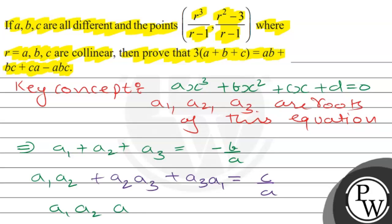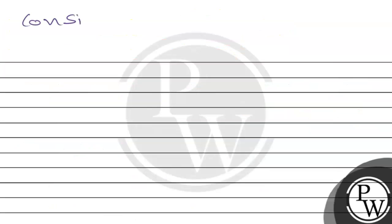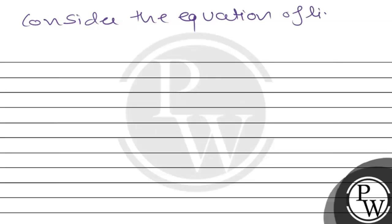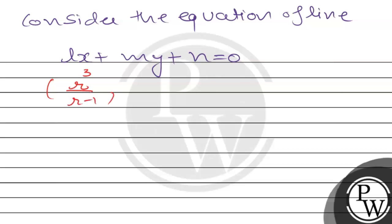By Vieta's formulas: a1·a2·a3 = -d/a. Now consider the equation of a line: LX + MY + N = 0. Our point given was (r³/(r-1), (r²-3)/(r-1)).